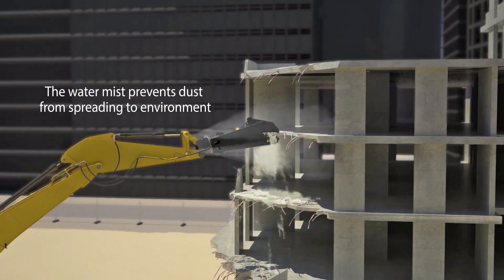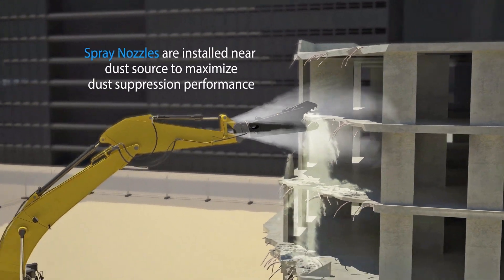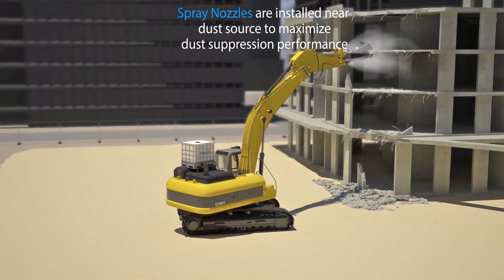To get the maximum dust suppression performance, spraying nozzles are to be installed onto the base machine's attachment head or near where the dust suppression is needed.